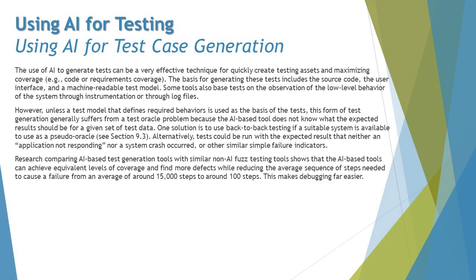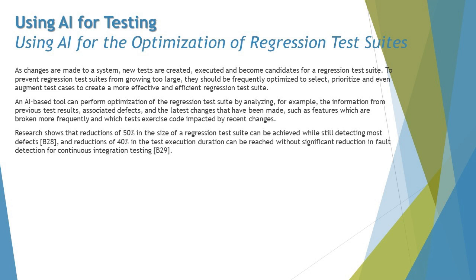On the same note, we are talking about using AI for the optimization of regression test suites. One of the common testing principles — the pesticide paradox — reminds us that using similar test cases again and again over time will not help yield a good new set of defects. If you keep running the same test cases, you are not covering how the product has evolved. Regression test suites are therefore good candidates for revision as the product evolves.